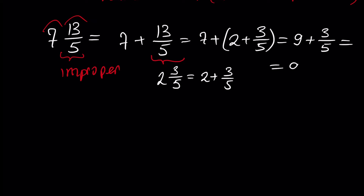In another form, this is 9 and 3 over 5. Since this fraction is already proper — the numerator is less than the denominator — we have a mixed number in proper form. We had an improper form before, but we can always write an improper fraction or improper mixed number as a proper fraction or proper mixed number.